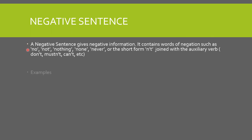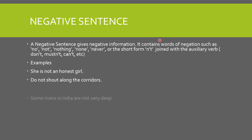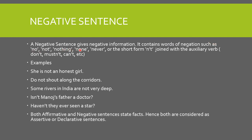A negative sentence gives negative information. It contains words of negation such as no, not, nothing, none, never, or the short form n't joined with an auxiliary verb — like don't, mustn't, can't. For example, 'do' is the auxiliary verb; with n't it becomes 'don't.' Similarly, 'must' becomes 'mustn't' and 'can' becomes 'can't' — all words of negation.